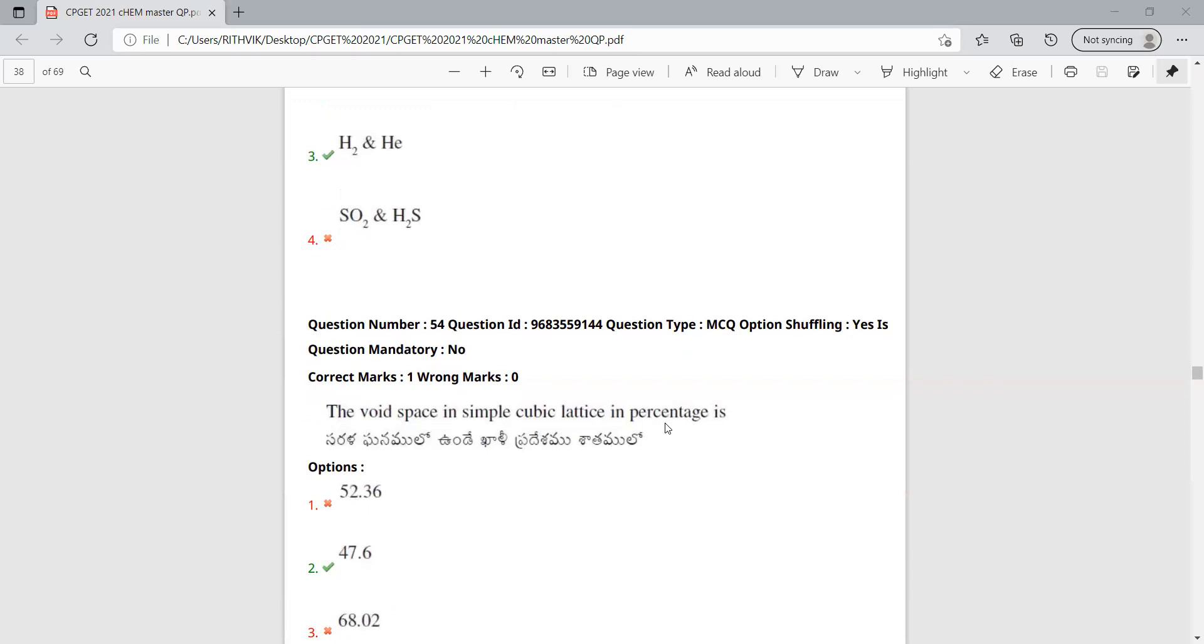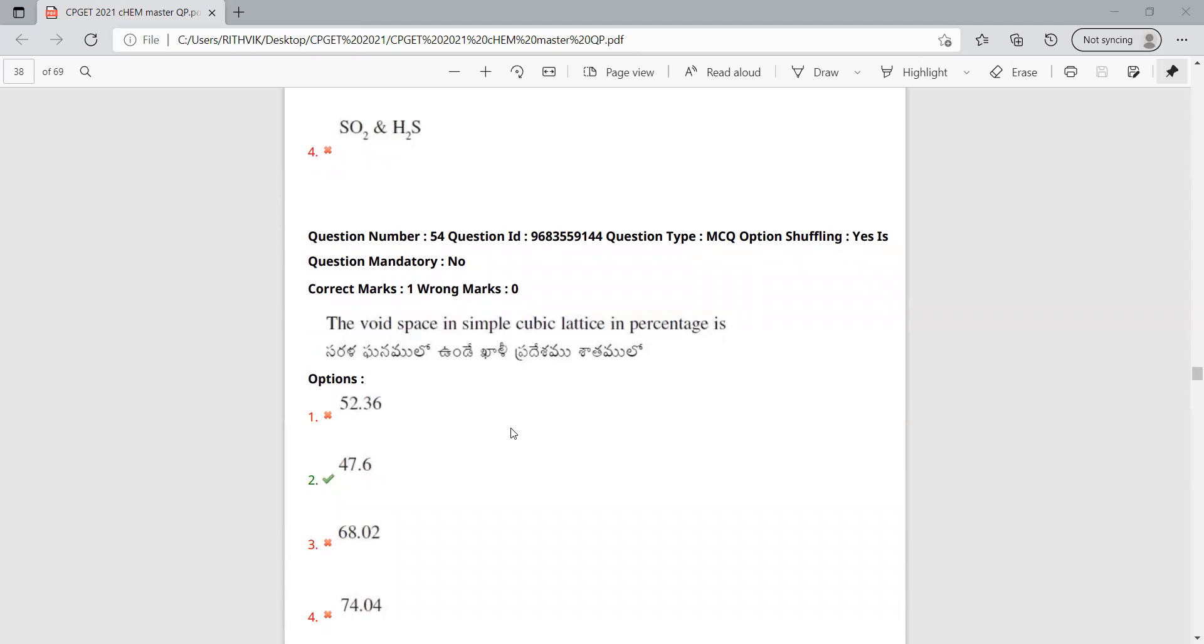The void space in simple cubic lattice in percentage is calculated using the packing fraction. Packing fraction in simple cubic lattice is around 52 percent, the usual value. The rest will be void, 100 minus 52 is around 48 percent, which means 47.6. This is the correct answer.